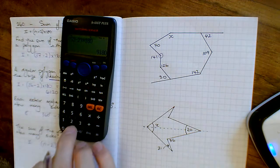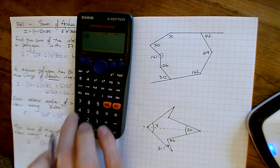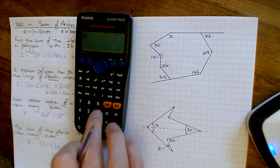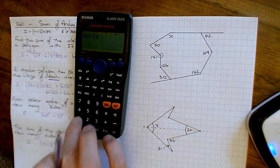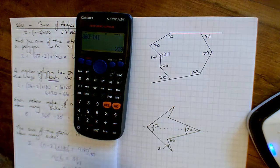So the inside one, if the outside one is 141, we've got 360 take away 141. Okay, 219. So 219 there.